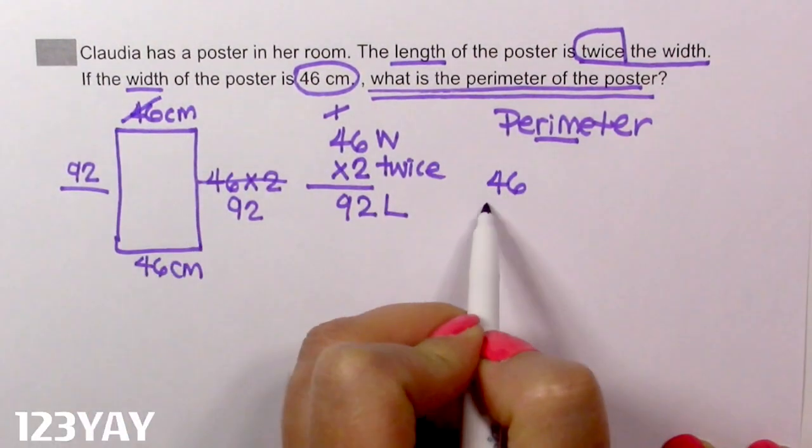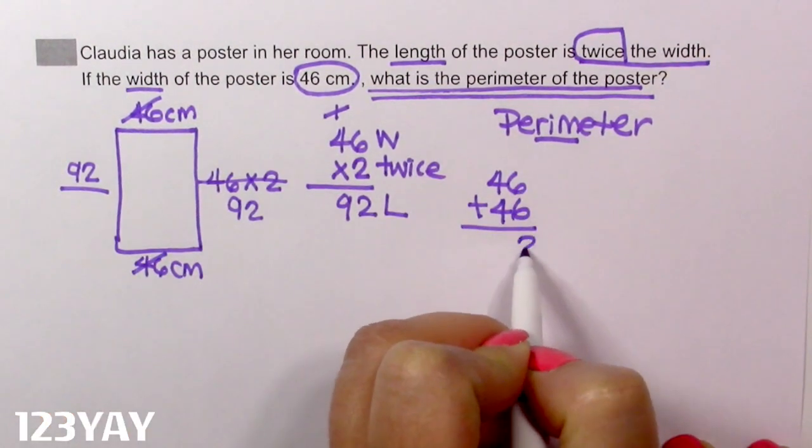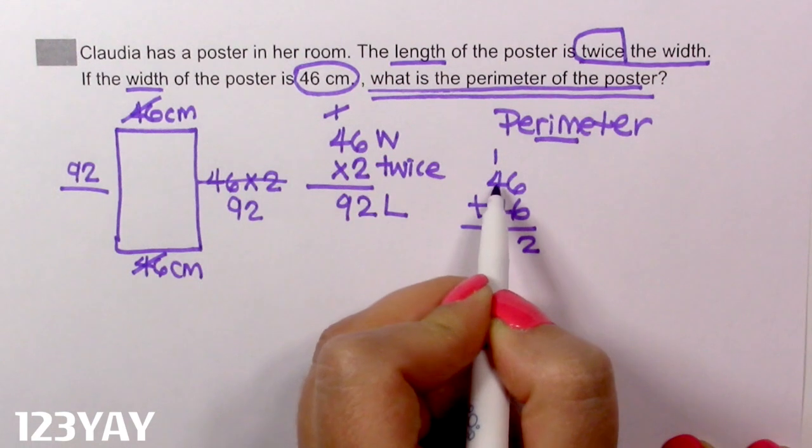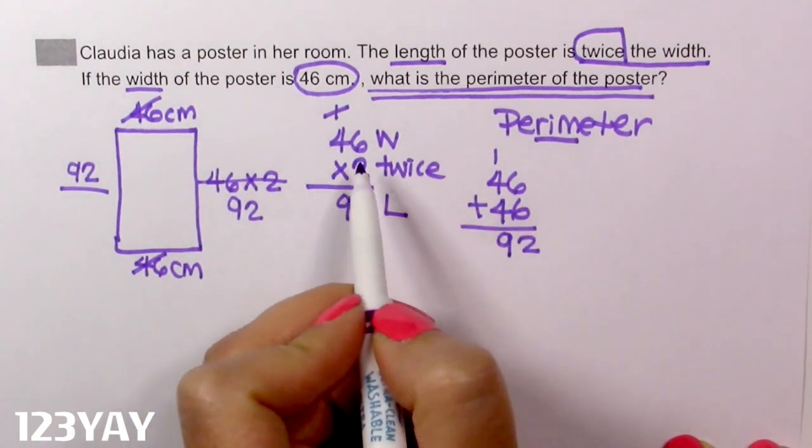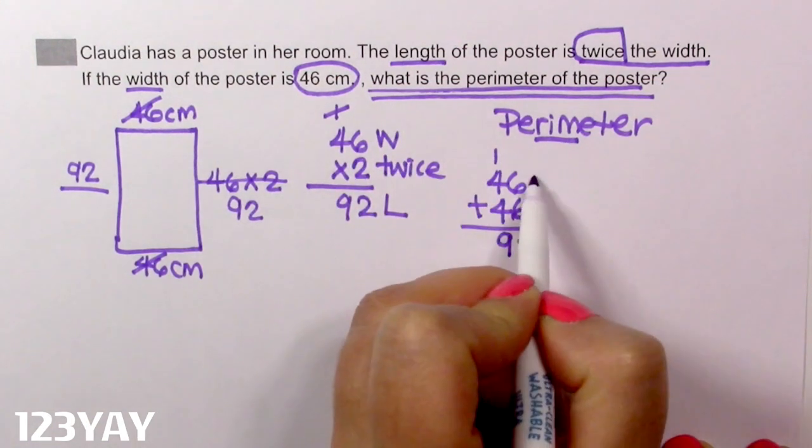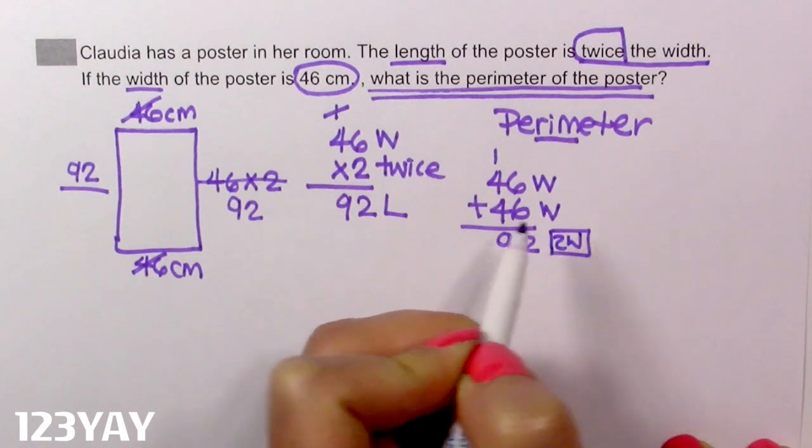46 plus 46 is 6 plus 6, 12. 4 plus 4, 8 plus 1, 92. Label, label, label. This is width, width. This is 2 widths. And now the lengths.